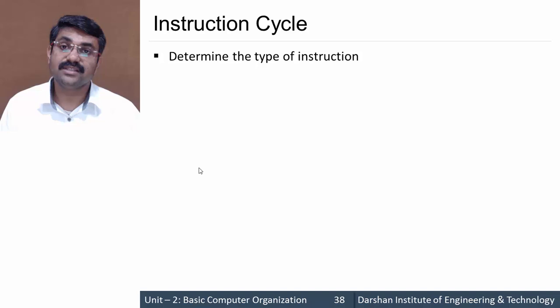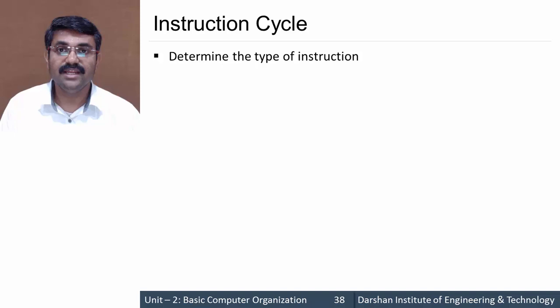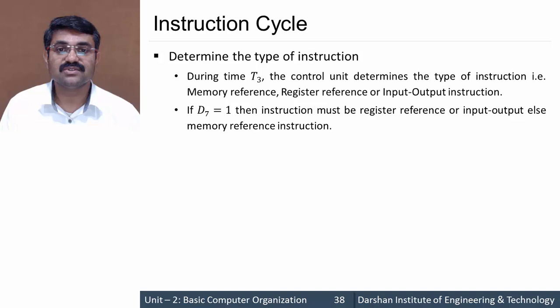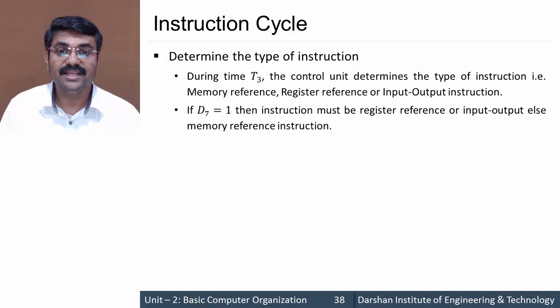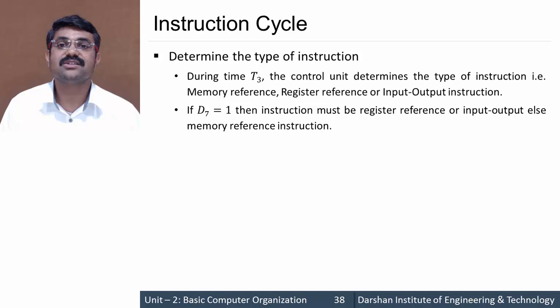After fetching and decoding, the decoding phase decides the type of instruction. At time t3, we decide whether the instruction is memory, IO, or register reference, based on the value of d7. If d7 is 1, it is either a register or IO instruction. For any other value — d0 to d6 being 1 — it is always going to be a memory reference instruction.